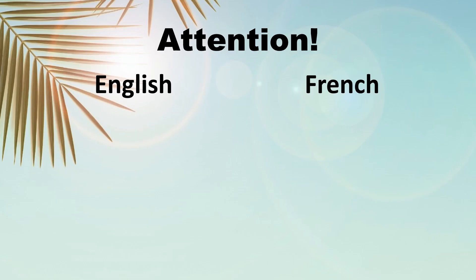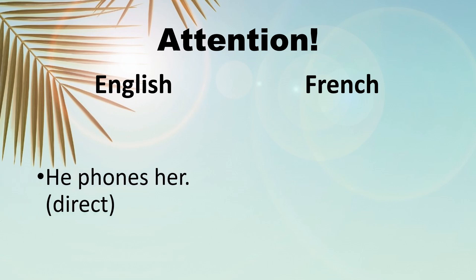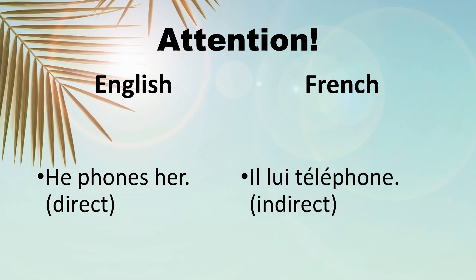Beware — it's not because a structure is direct in English that it is going to be direct in French. Here's an example: 'He phones her.' There's no preposition between 'phone' and 'her', so it's direct in English. But the French translation is il lui téléphone, which means it's an indirect structure in French.